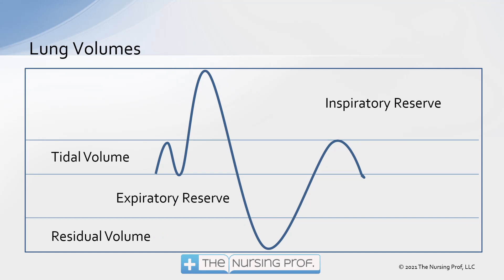Also with the respiratory system, we need to be thinking about the different volumes that are in the lungs. Notice this narrow band across the middle of this chart — that's the tidal volume. That's what you're breathing in and out right now. As you're just relaxing and breathing normally, your tidal volume is going to be a very small part of your overall lung volume. However, if you were to take a really deep breath in, that would be your inspiratory reserve — the top part of the diagram. If you were to blow out all the air you could possibly blow out, that's your expiratory reserve.